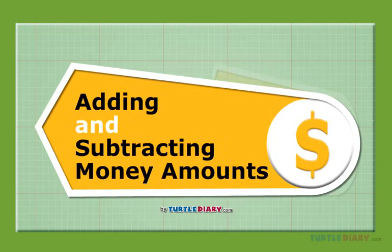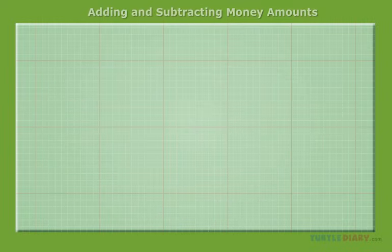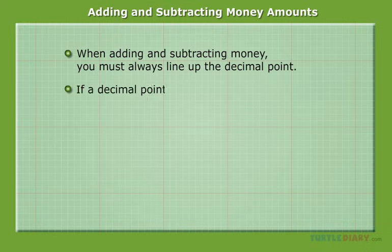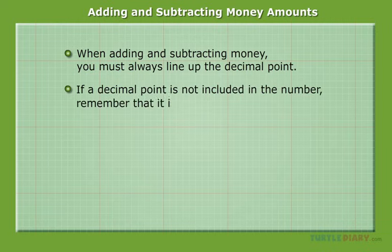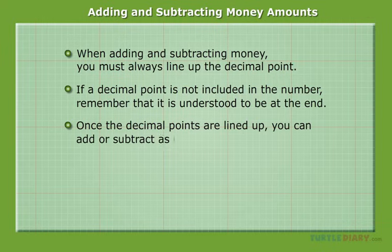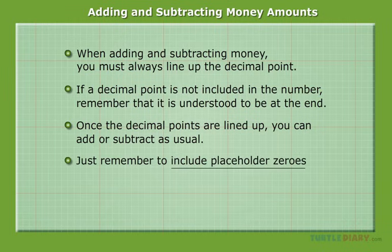Adding and Subtracting Money Amounts. When adding and subtracting money, you must always line up the decimal point. If a decimal point is not included in the number, remember that it is understood to be at the end. Once the decimal points are lined up, you can add or subtract as usual. Just remember to include placeholder zeros if needed.